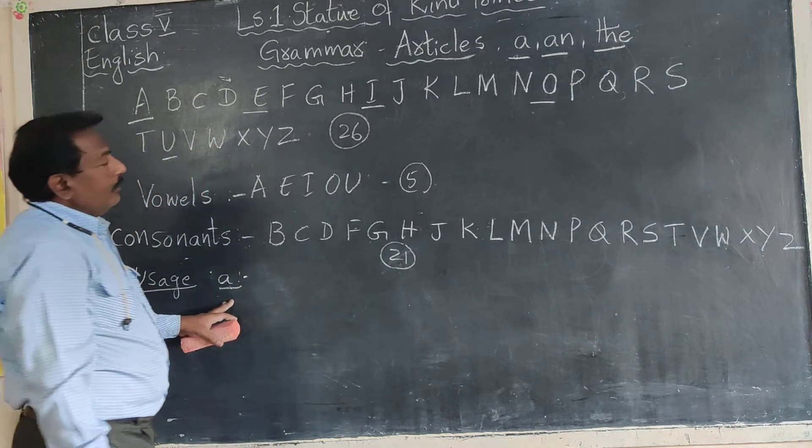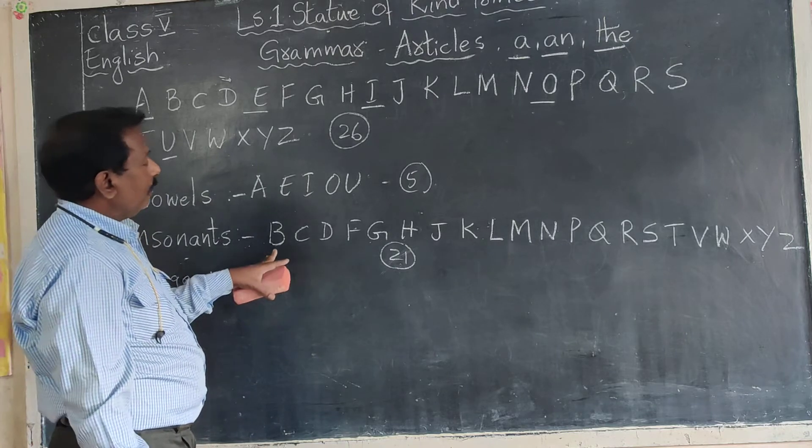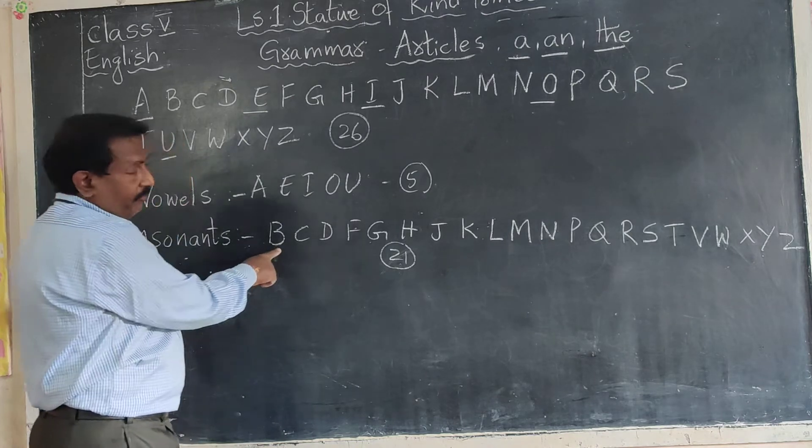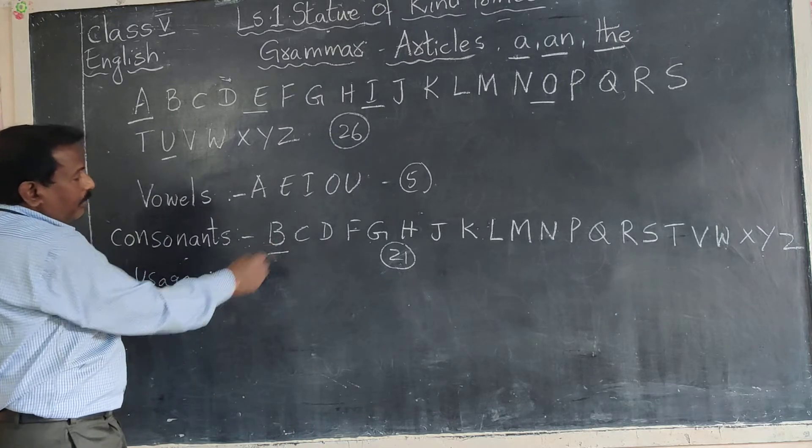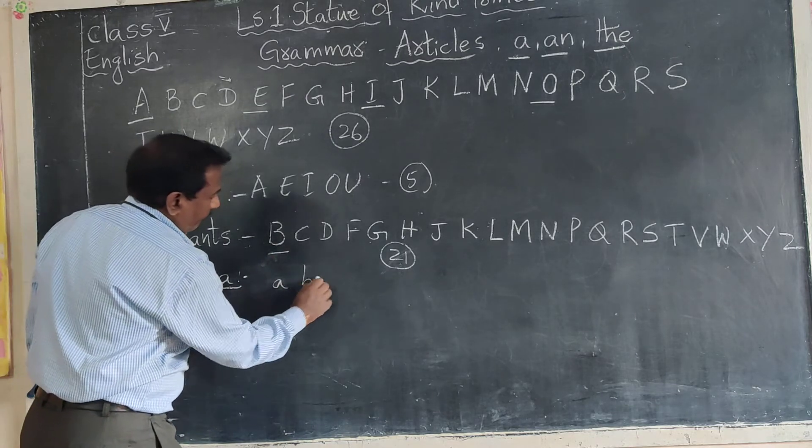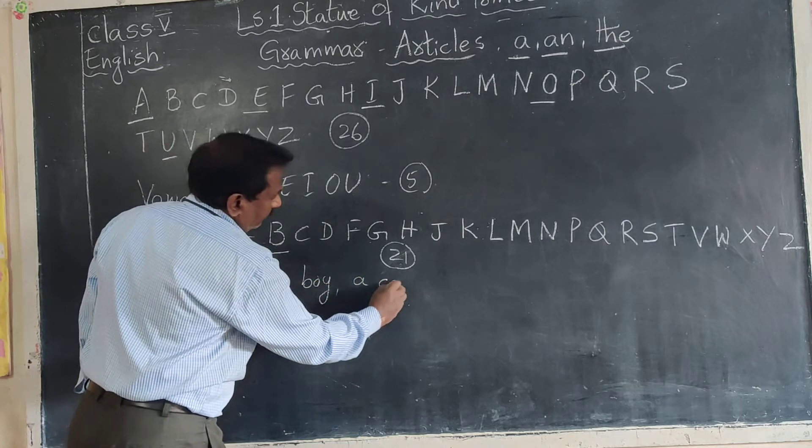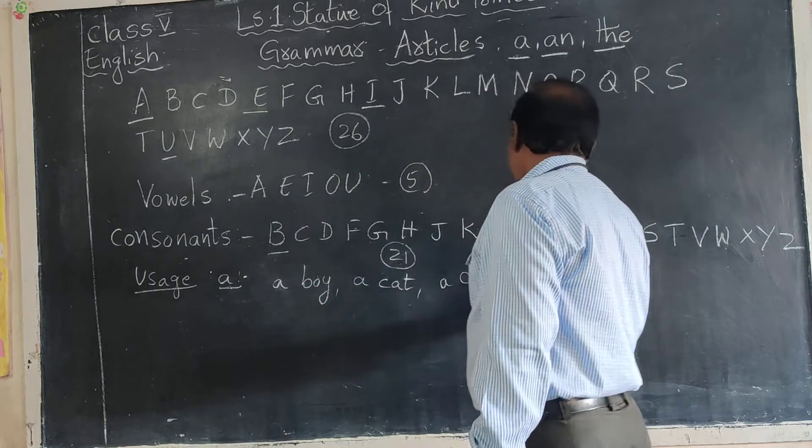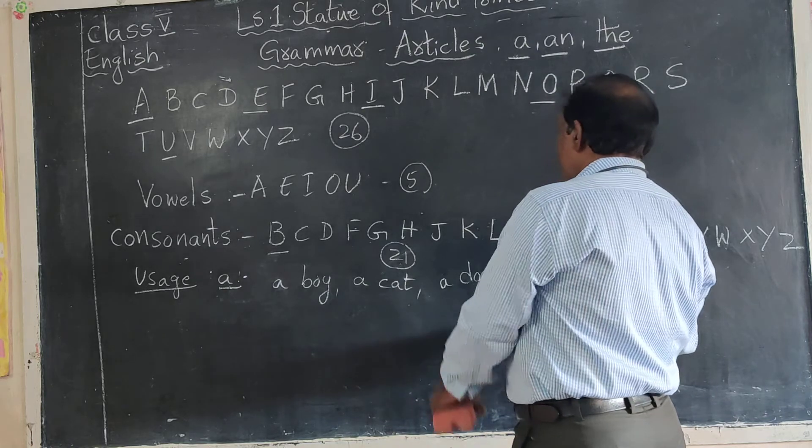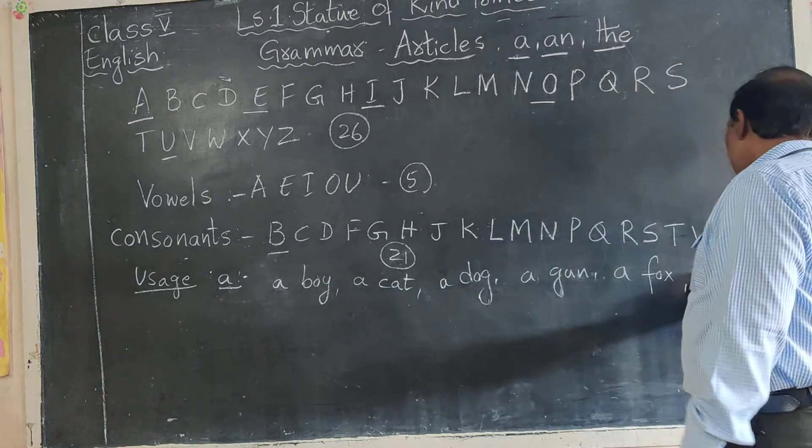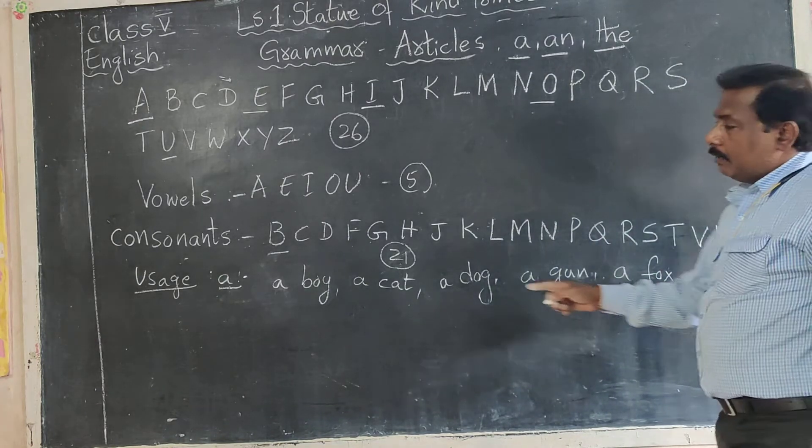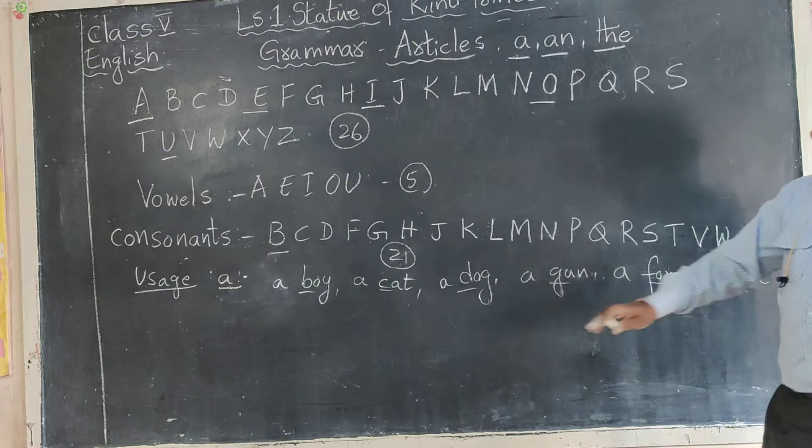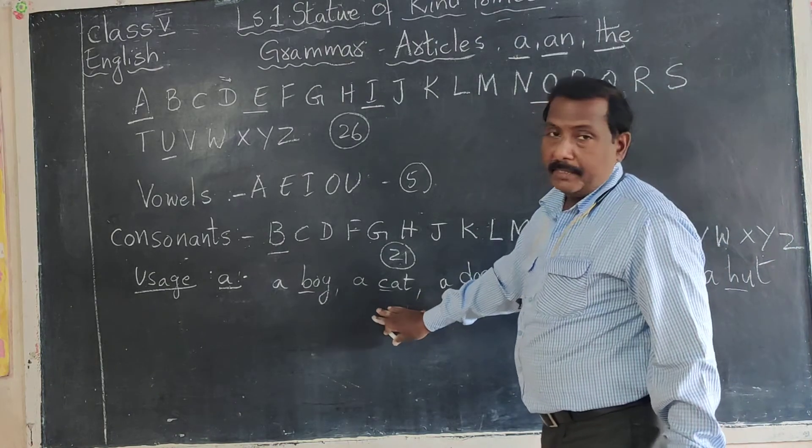First we see A. Where we use A? A is used before singular countable noun starting with consonant. Consonant starting words - before we write A. For example: a boy, a cat, a dog, a gun, a fox, a hut. These are the consonants B, C, D, G, F, H. The consonant starting noun, before we write A.